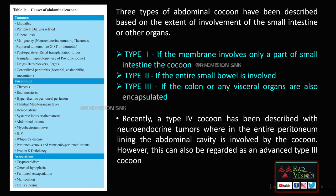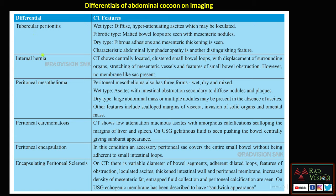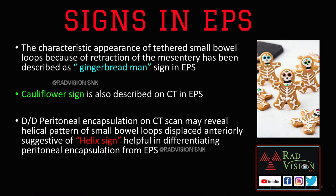The differential diagnoses for EPS include tubercular peritonitis, internal hernias, peritoneal mesothelioma, peritoneal carcinomatosis, and peritoneal encapsulation syndrome. Signs in EPS include the gingerbread man sign — the characteristic tethered small bowel loops due to retraction of the mesentery — and the cauliflower sign. There is also the helix sign, which helps differentiate peritoneal encapsulation syndrome from encapsulating peritoneal sclerosis.